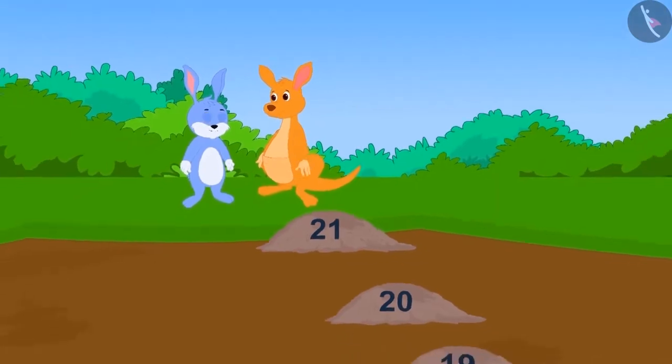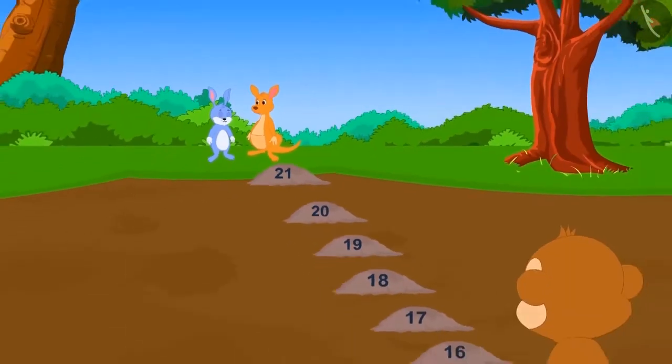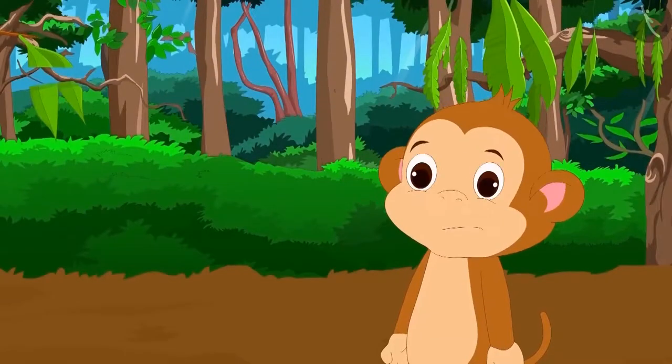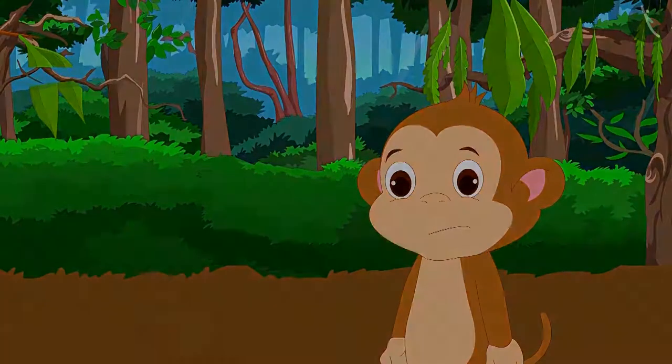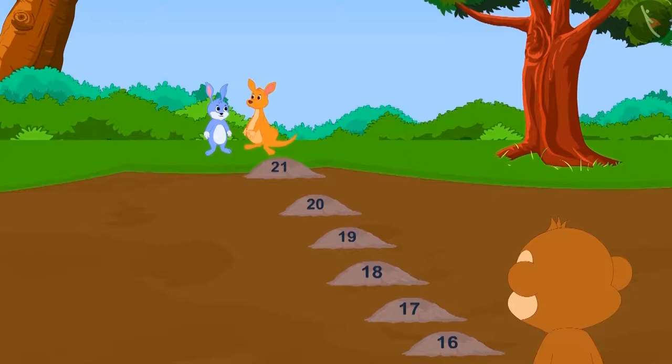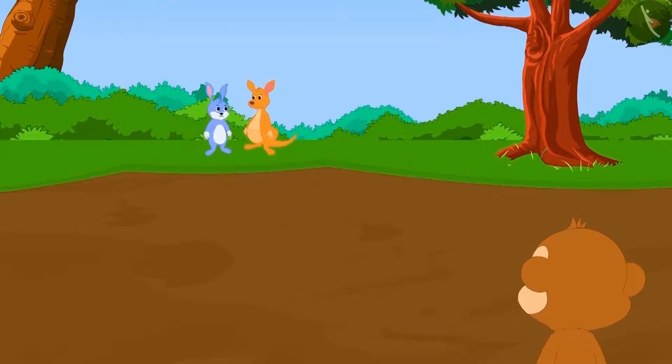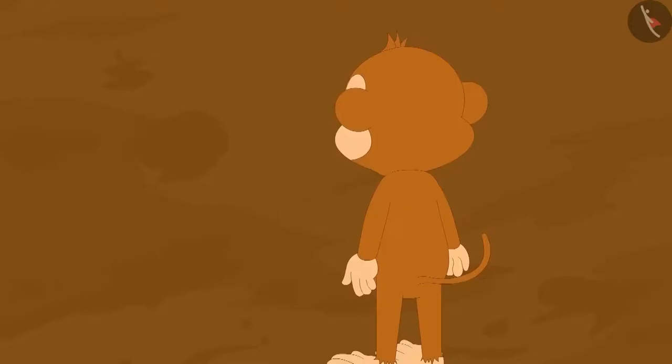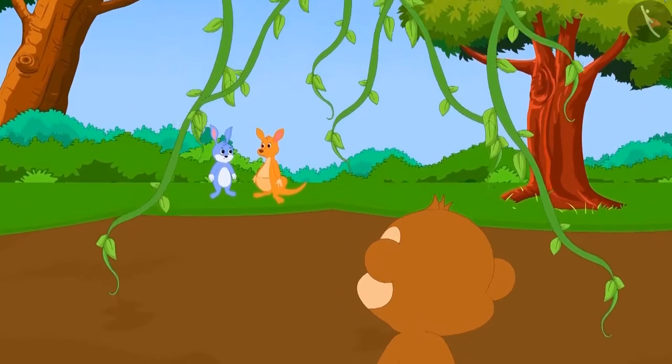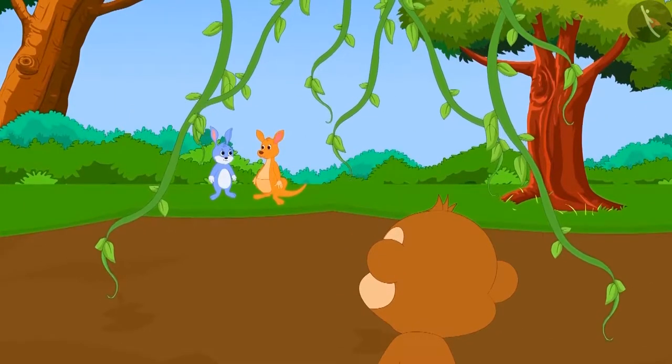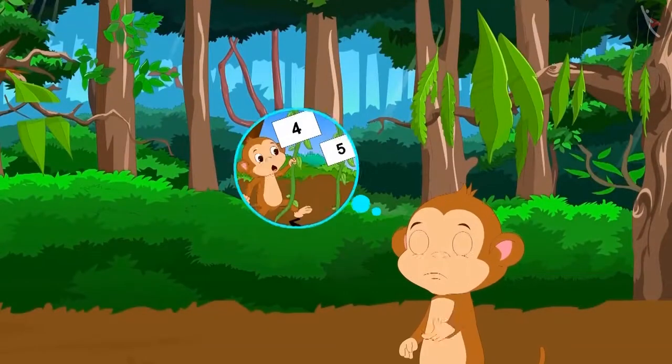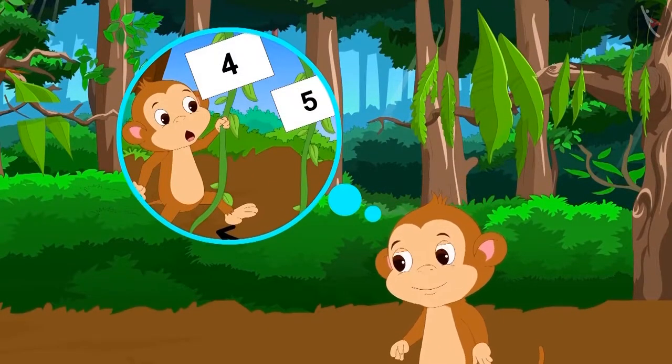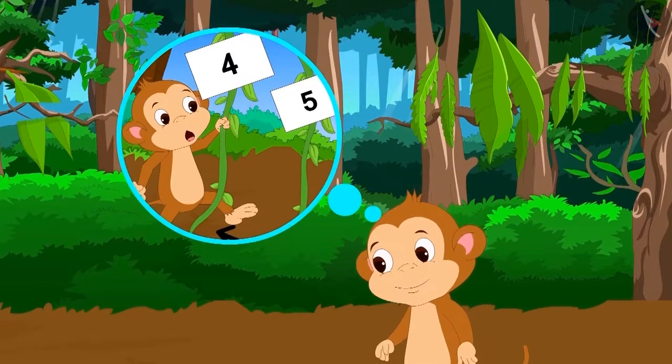Now, kittu and bunny had crossed the swamp. But babban was still on the other side of the swamp. Suddenly, all the stones on the swamp got buried inside the swamp. Just then, babban's eye ventured above the swamp. Some creepers were hanging there. Babban thought that he could cross the swamp by hanging on the creepers.